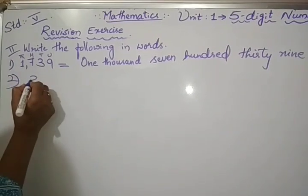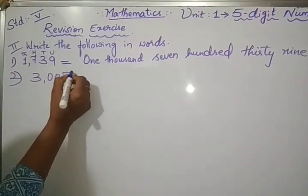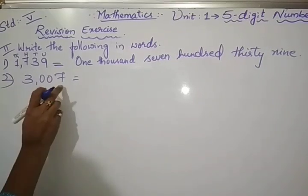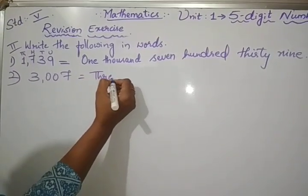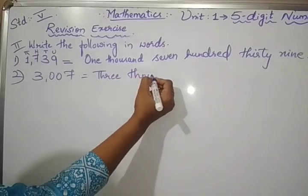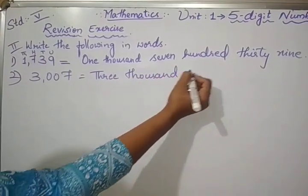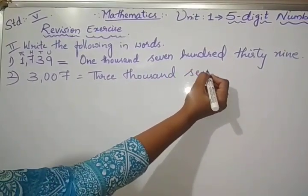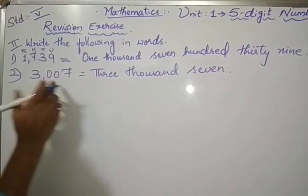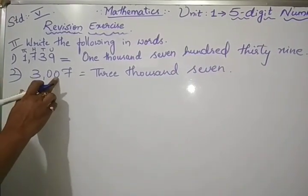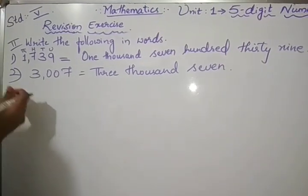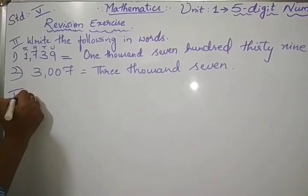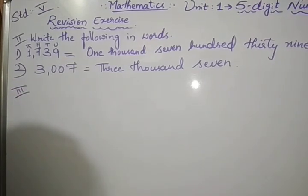Second one, unit, tens, hundreds, thousands, 3,007. See why only 7, because in 100th place, 10th place, there is no number, 0 is there. Remaining 2, you do it yourself. We will go for third Roman.